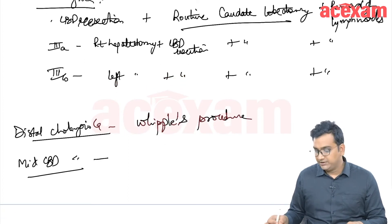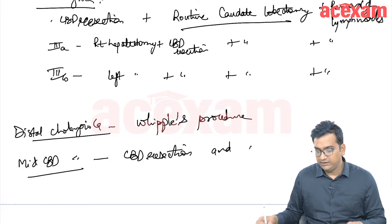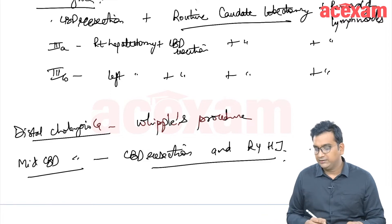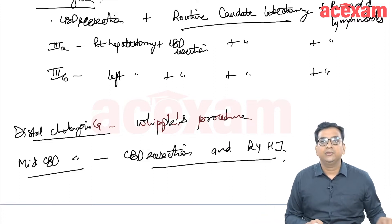We can go ahead with the CBD resection and RU-NY hepatico-jejunostomy. This is regarding cholangiocarcinomas. Next topic is hemobilia.